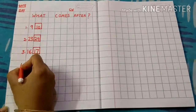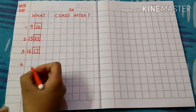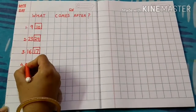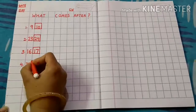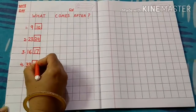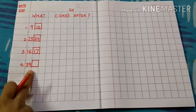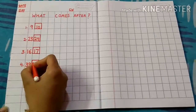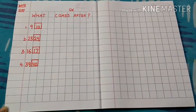Fourth number: 39. Write 39 and make a box. After 39, the next number that comes is 40. So the answer is 40.